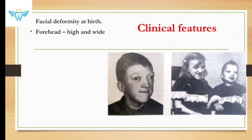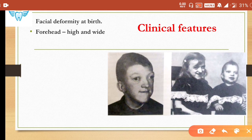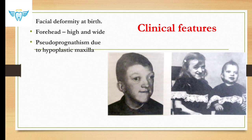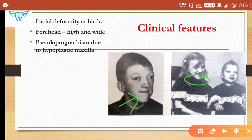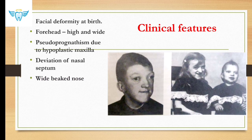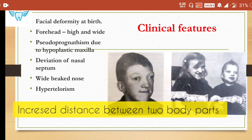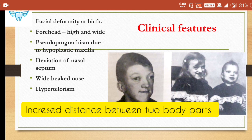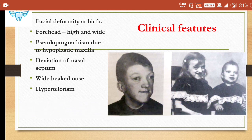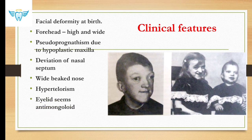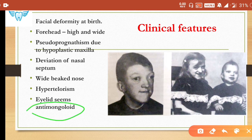The forehead is high and wide — correlate this with the pictures shown. There is pseudo-prognathism due to a hypoplastic maxilla, giving a pronounced chin and mandible. There is also deviation of the nasal septum, a wide beaked nose, and ocular hypertelorism — increased distance between the two eyes, which is evident in the images.